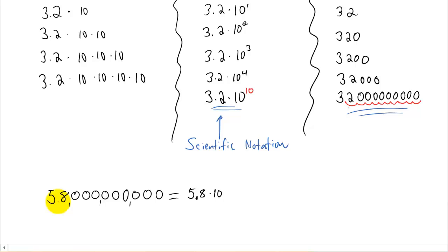Our 5.8 decimal place would be here. We multiplied it by 10... 4, 5, 6, 7, 8, 9, 10 times. So this giant number, which I believe is 58 billion, can be written as 5.8 times 10 to the tenth power.